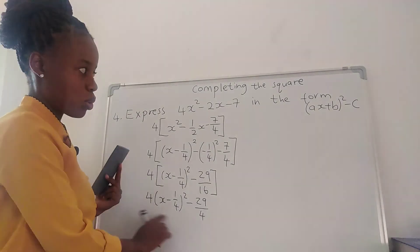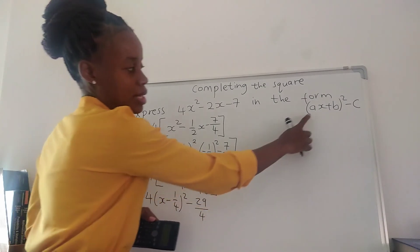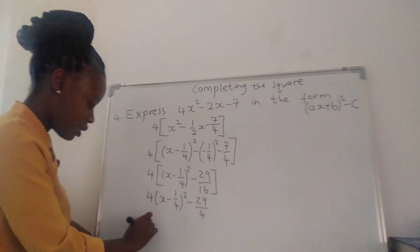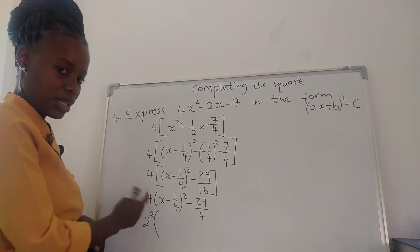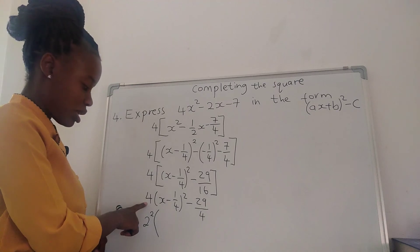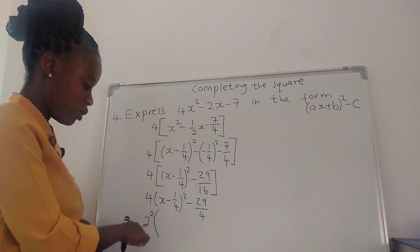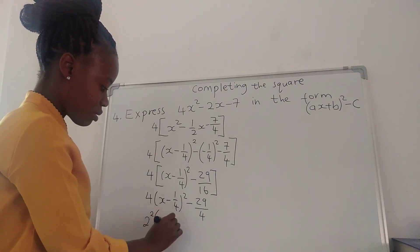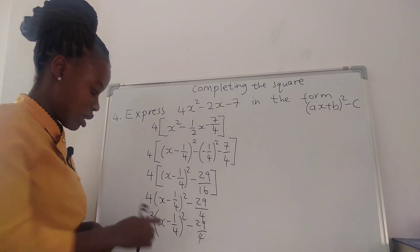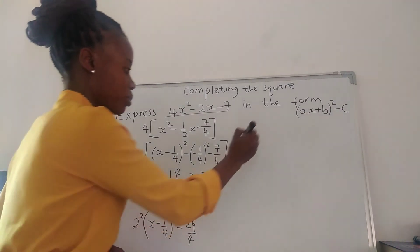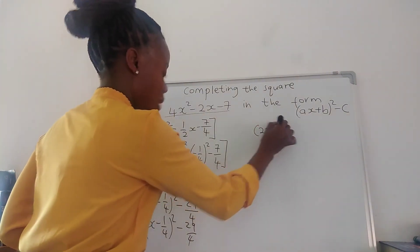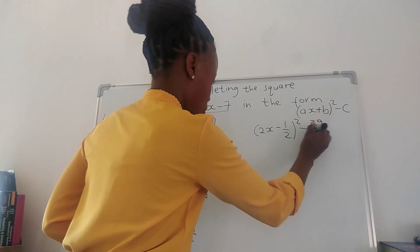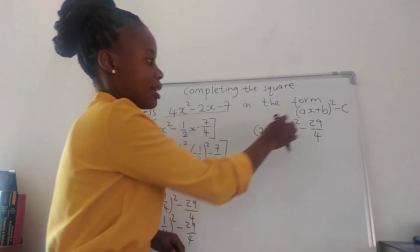We're supposed to express this in the form ax plus b squared minus c, where a is inside. You can see that a is inside, so we need to make sure we don't have a plain number outside. 4 is the same as 2 squared. If we had 9, we'd say 3 squared; if we had 16, we'd say 4 squared. So we take 2 inside the bracket: this is going to be 2x minus 2 times 1 over 4, which is one half. So we get 2x minus one half squared minus 29 over 4. This is how to express it in the form ax plus b squared minus c.